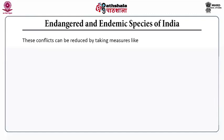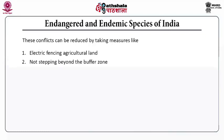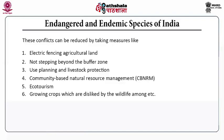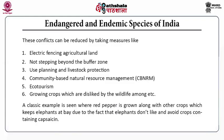To reduce the risks of these conflicts, measures like electric fencing near wildlife zones should be done. Agricultural land should not step beyond the buffer zone. Planning should be done for livestock protection, and community-based natural resource management should be carried out. Ecotourism should be supported. Those crops should be grown that are disliked by wildlife — a classical example is growing red pepper alongside other crops so that elephants, which dislike capsaicin-containing crops, are kept away.